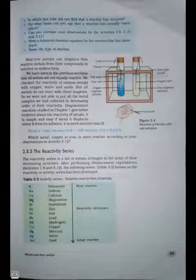Which metal, copper or iron, is more reactive according to your observations in activity 3.12? In figure 3.4, reaction of metal with salt solution is shown. 3.2.5 The reactivity series. The reactivity series is a list of metals arranged in the order of their decreasing activities. After performing displacement experiments, the following series, Table 3.2, known as the reactivity or activity series, has been developed.